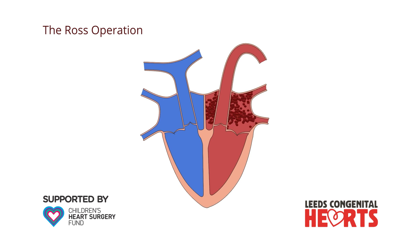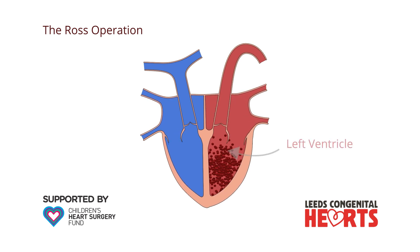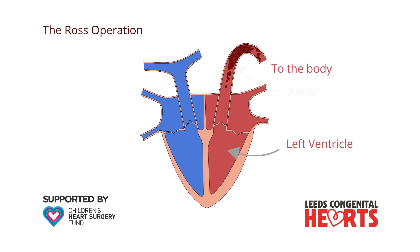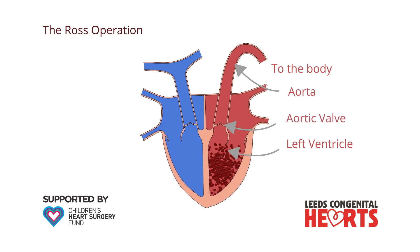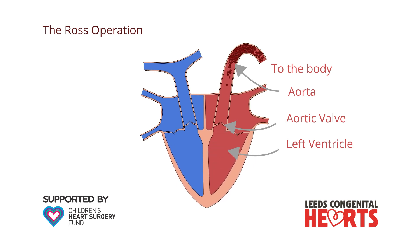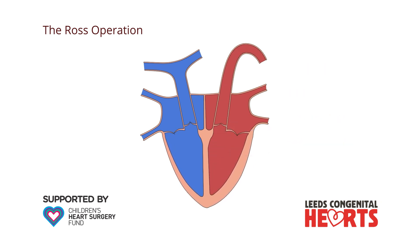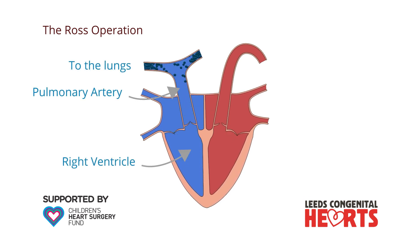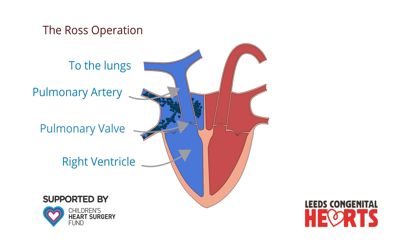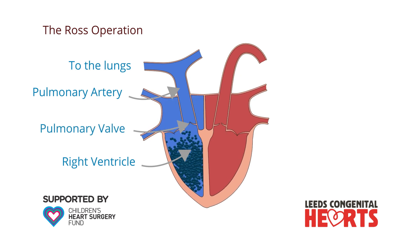On the left side of the heart, blood is pumped out of the left ventricle to the body via the aorta. The aortic valve opens to let the blood out and closes to prevent blood returning into the heart. On the right side of the heart, blood is pumped out of the right ventricle to the lungs via the pulmonary artery. The pulmonary valve opens to let blood out and closes to prevent blood returning to the heart.